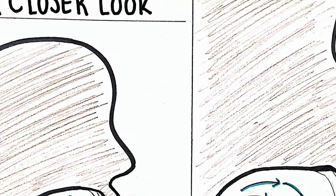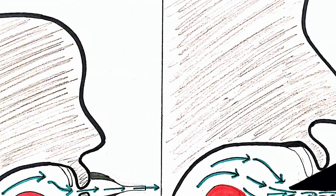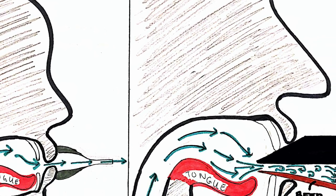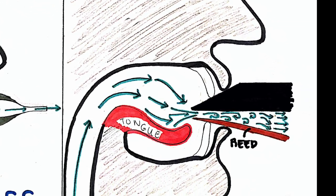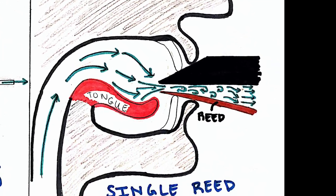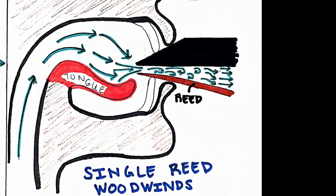The vena contracta concept is similarly applied to woodwind instruments like the clarinet and saxophone. By applying pressure from the mouth onto the mouthpiece, the passageway of air is severely constricted and turbulence within the mouthpiece is created. This causes the reed to vibrate, which generates the sound we hear.